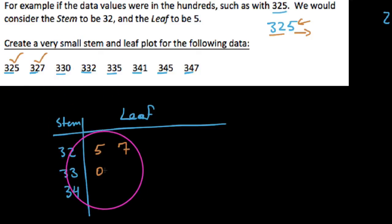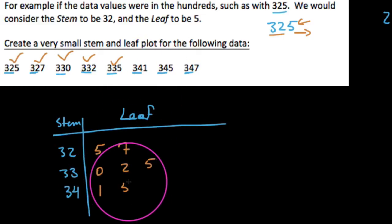We say 330, so 3, 3, 0, 3, 3, 2, 3, 3, 5. I don't have anything else that lives in the 330 range, so now we're talking about the 340s. We say 340 would be 341, 345, and 347.